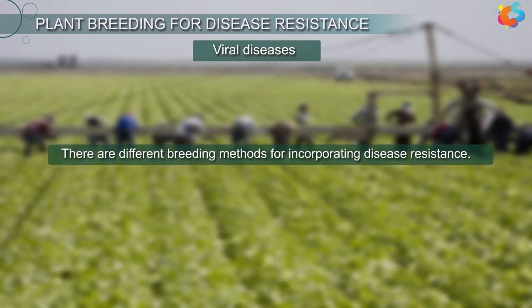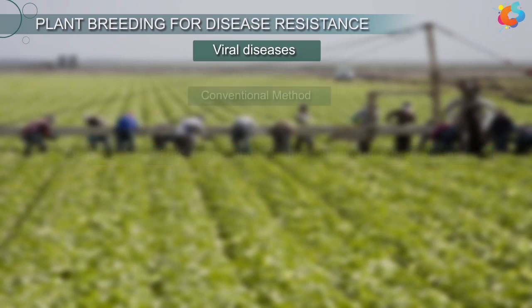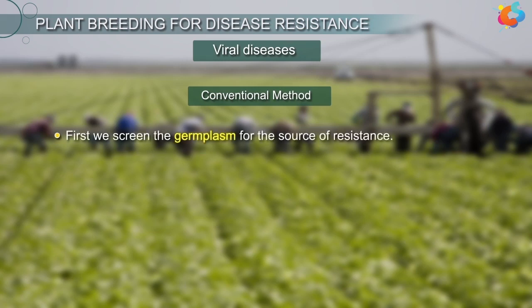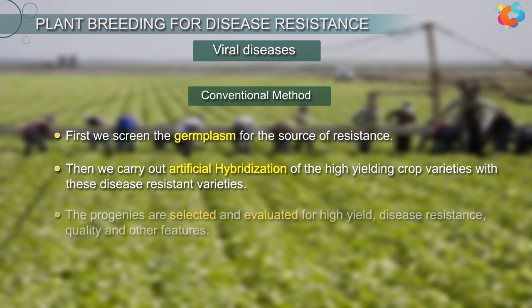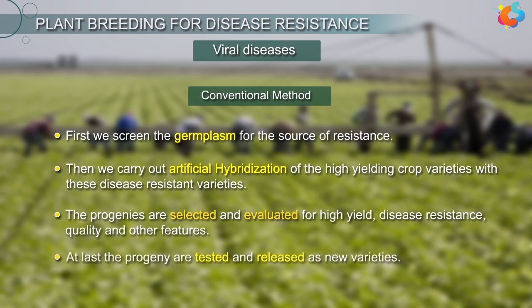There are different breeding methods for incorporating disease resistance. Let us first discuss the conventional method. First, we screen the germplasm for the source of resistance. Then we carry out artificial hybridization of the high-yielding crop varieties with these disease-resistant varieties. The progenies are selected and evaluated for high yield, disease resistance, quality and other features. At last, the progeny are tested and released as new varieties.